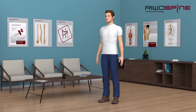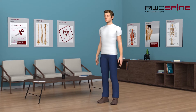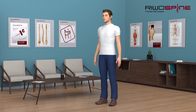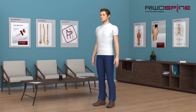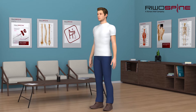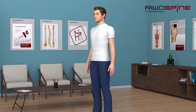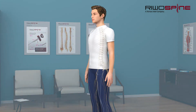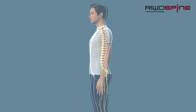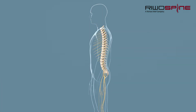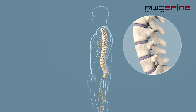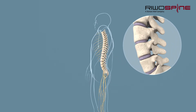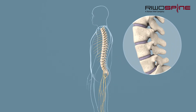Due to its anatomical structure, the human spine allows enormous freedom of movement and is at the same time the center of the musculoskeletal system. The intervertebral discs of the spinal column play an important role in this.